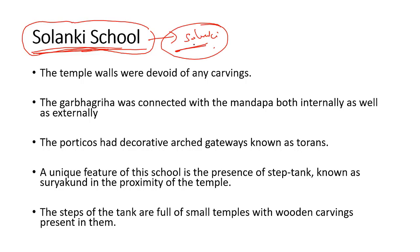The Solanki school of architecture was patronized by the Solanki Rajput rulers, who ruled present-day Gujarat and Rajasthan. This school shares common features with the Nagara style — such as the Shikara, Mandapa, Garbhagraha, and Pradakshinapatha — as well as a high-rise platform and no boundary wall. However, the Solanki school also developed its own unique features.